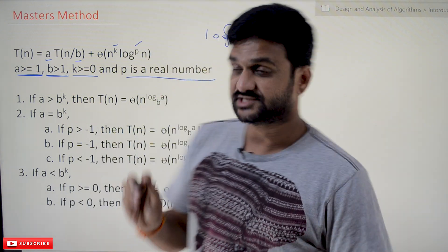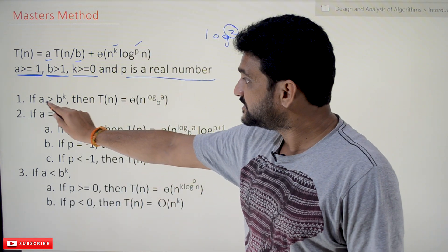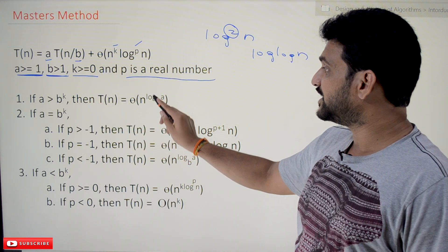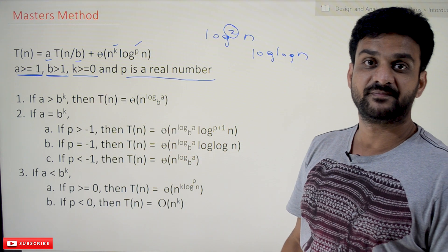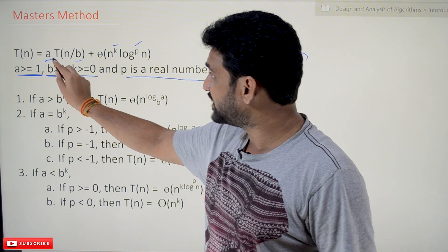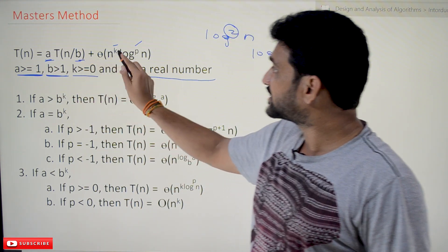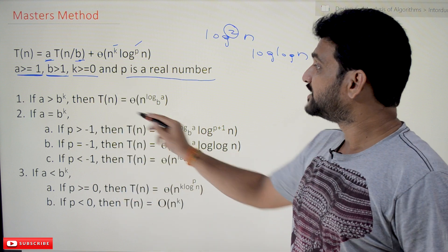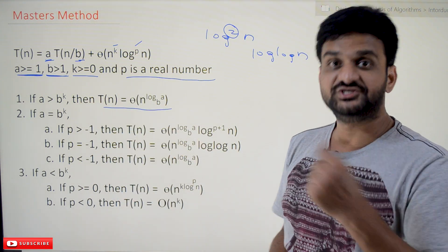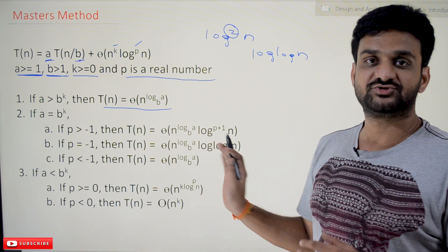If a is greater than b^k, then T(n) is equal to Θ(n^(log_b a)). If the value of a is greater than b^k, that condition is true, then this is going to be the efficiency of that algorithm. We are going to solve lots of problems based upon this Master's Method.